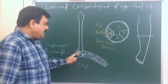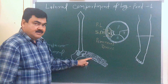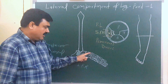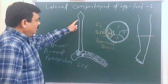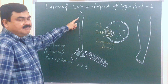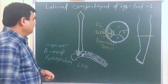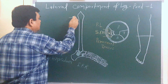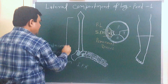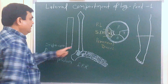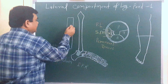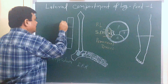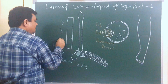In this diagram you can see the fifth metatarsal, the first metatarsal, the medial cuneiform, and the cuboid. Here is the head, the neck of the fibula, and the shaft of the fibula. If you look at the lateral surface of the fibula, this surface can be divided into three parts: upper one-third, middle one-third, and lower one-third.